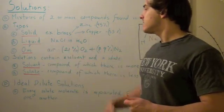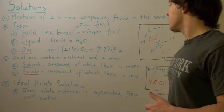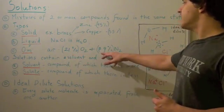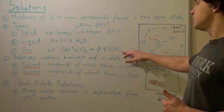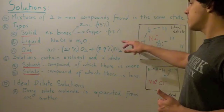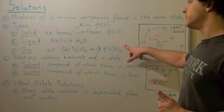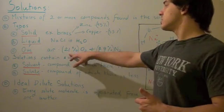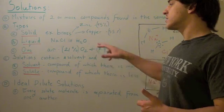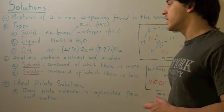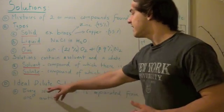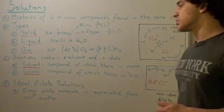In our gas solution, there's 79% nitrogen, so nitrogen is the solvent, and 21% oxygen, so oxygen is the solute.